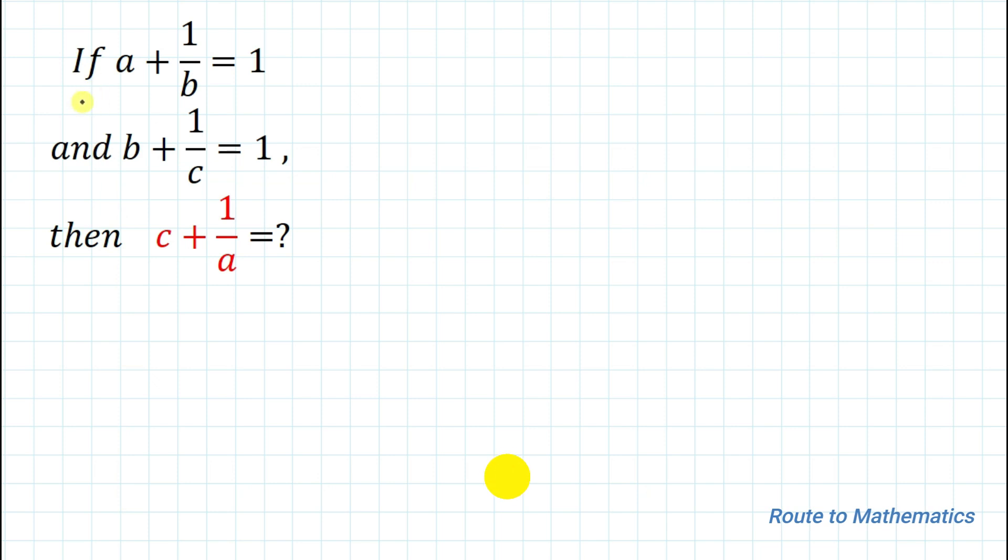Hello everyone, welcome to my channel Route to Mathematics. In this video we are going to solve an interesting algebraic equation. The given question is: if a + 1/b = 1 and b + 1/c = 1, then find the value of c + 1/a. The question looks tricky, but once you know the trick you can solve it very easily. So without any delay, let's start the solution.